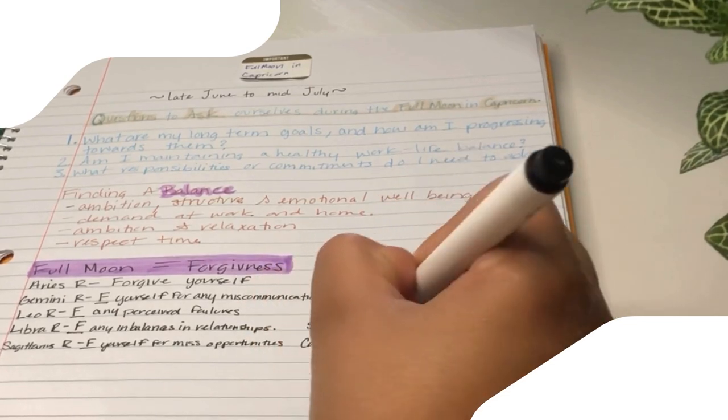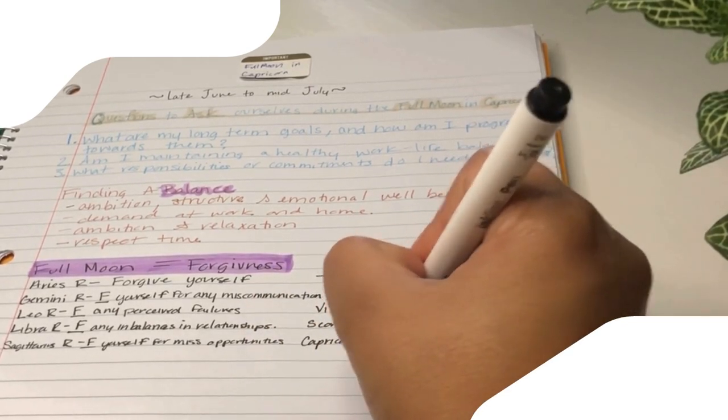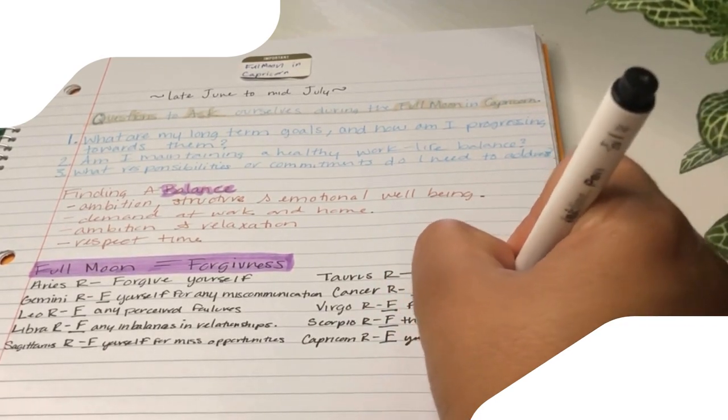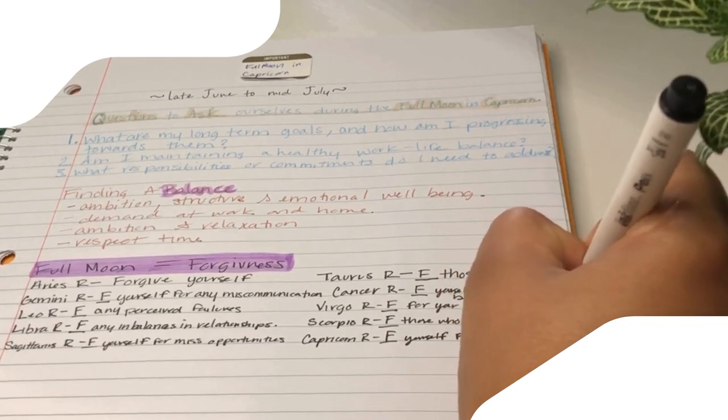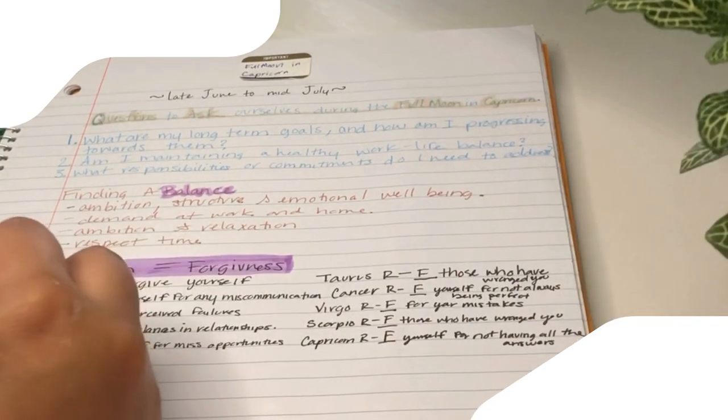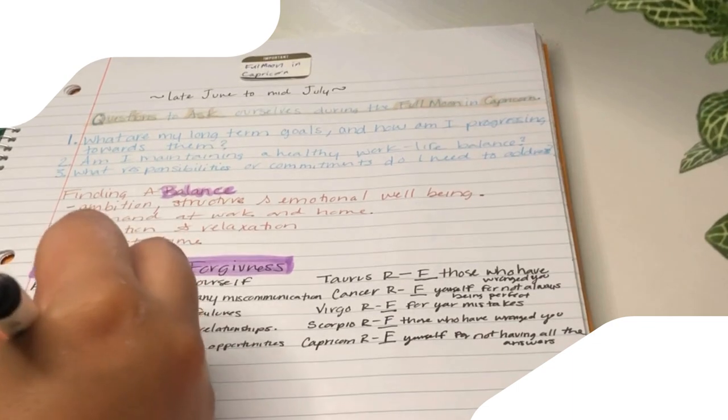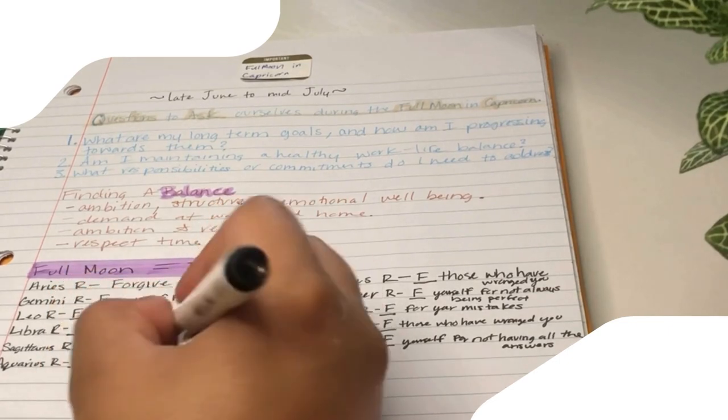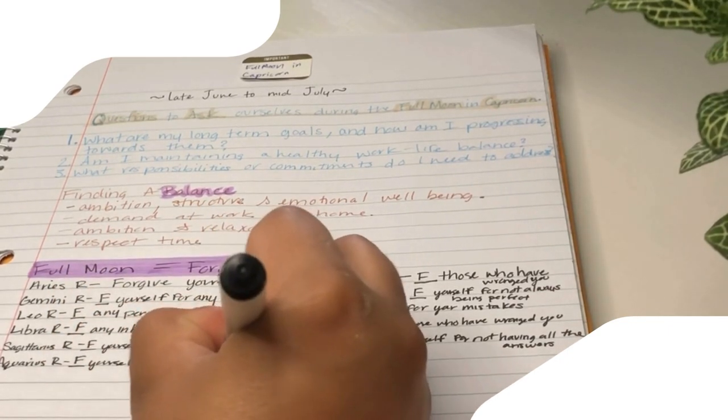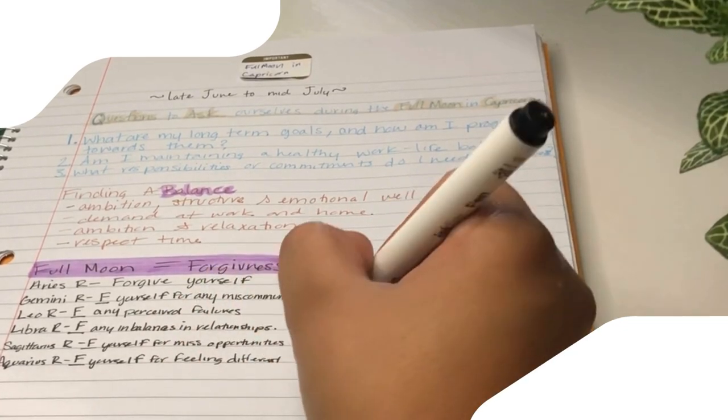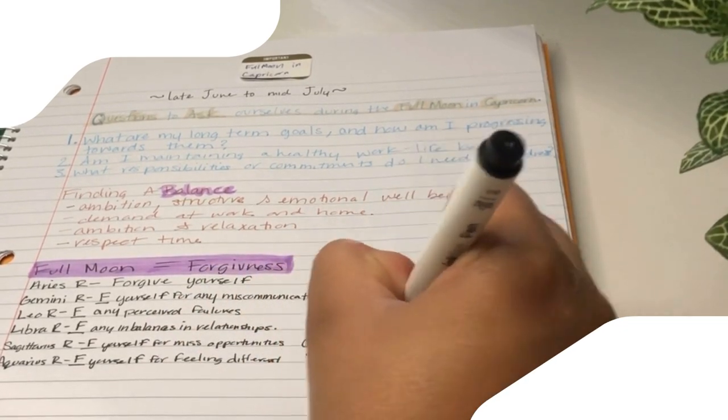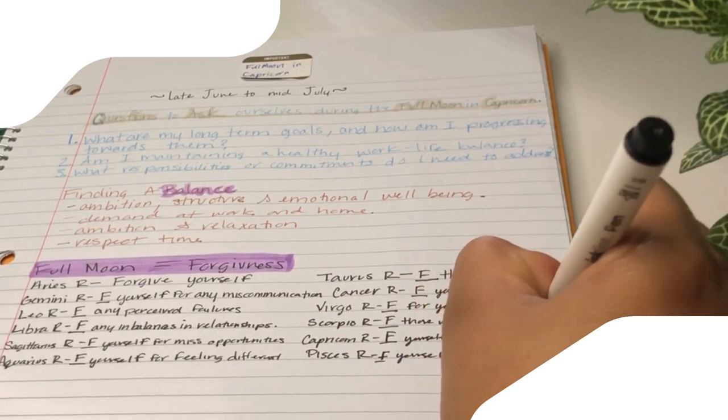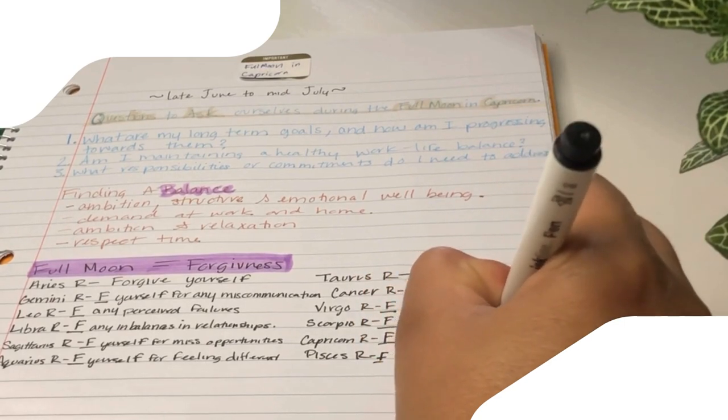Gratitude for the full moon in Capricorn energy can be expressed by honoring the lessons learned through perseverance and dedication. This lunar phase encourages us to take stock of our long-term goals and the steps we've taken to realize them. Reflecting on the obstacles overcome and the milestones reached can foster a deeper appreciation for our resilience and determination. It is also a time to give thanks to our mentors, our guides, and support systems that have contributed to our journey, acknowledging the collective effort required to achieve our ambitions.